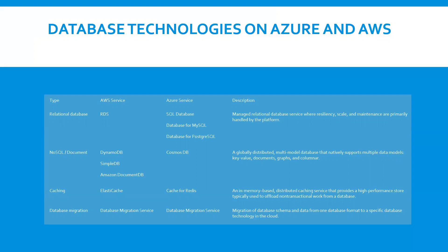Azure Data Lake Storage is a large-scale data storage optimized for big data analytics workloads. Machine Learning is used to build and apply predictive analytics on data. Azure Stream Analytics provides real-time data analysis. Azure Data Lake Analytics is a large-scale analytics service optimized to work with Data Lake Store. Azure HDInsight is a managed Apache distribution that includes Hadoop, Spark, Storm, or HBase. Azure Power BI is used to power data visualization.